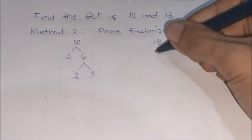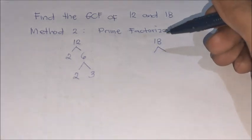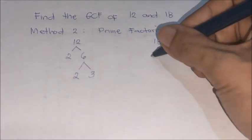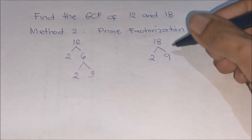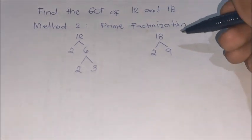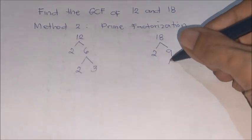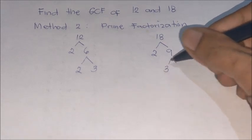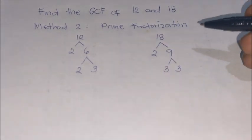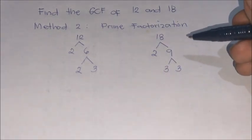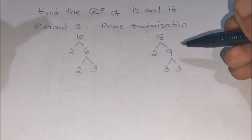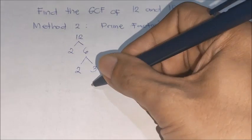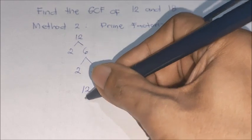Next is 18. What are the factors of 18? We can use 2 and 9. Then, 9 has factors: 3 times 3. When all are prime factors, we stop there.